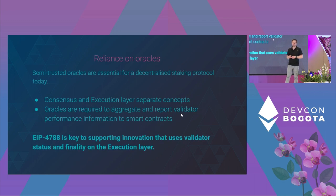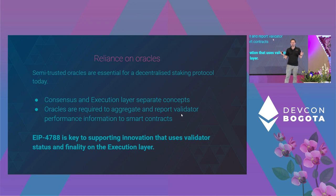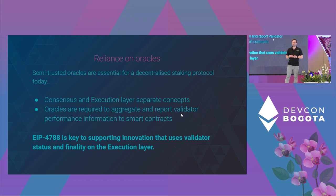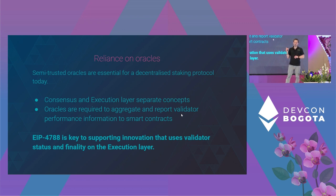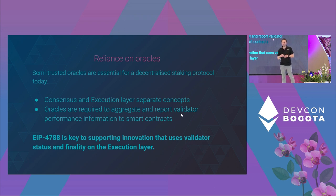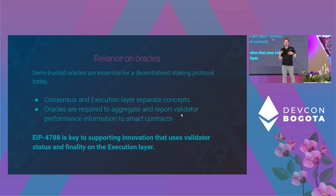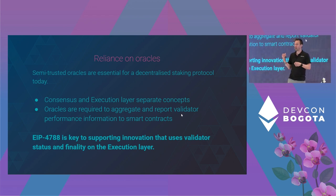Reliance on oracles. Semi-trusted oracles are essential for decentralized staking protocols today. The consensus and execution layer are separate concepts and they've only just been merged together. Oracles are required to aggregate and report validated performance information to the protocol smart contracts. There's an EIP being considered for Shanghai — EIP-4788 — which adds access to the beacon chain state root to the execution layer so that smart contracts can verify proofs about the beacon chain state. This is key to reducing the role of semi-trusted oracles in decentralized staking protocols and allowing innovation around validator status and finality on the execution layer.